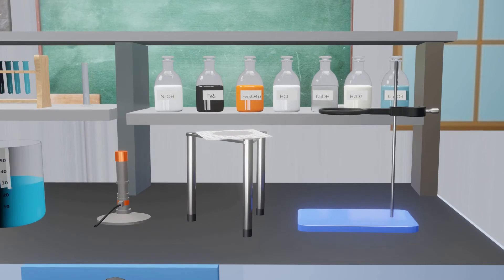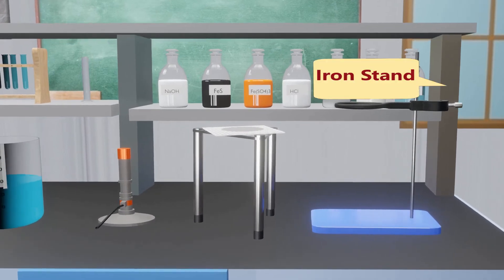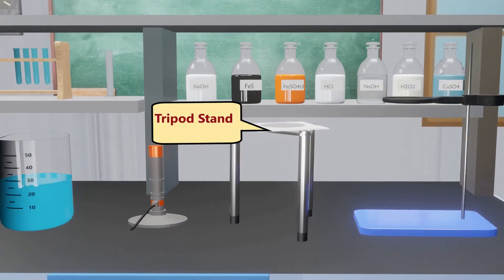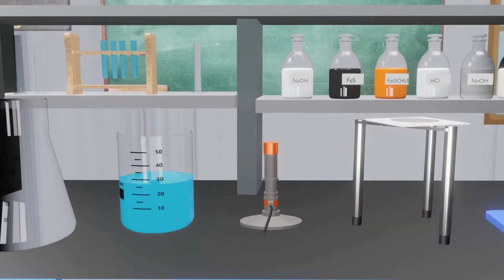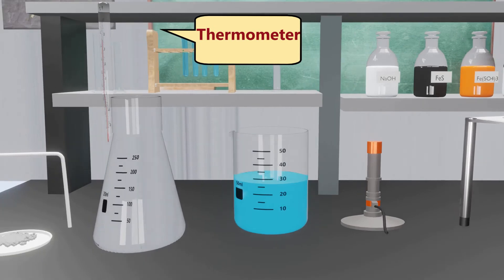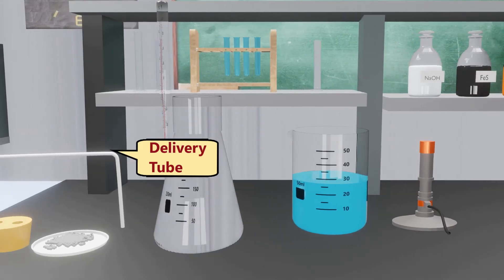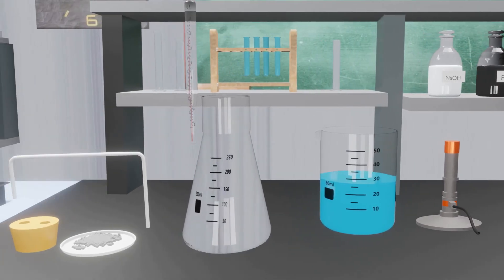Materials required for this experiment are iron stand, tripod stand, Bunsen burner, beaker, conical flask, thermometer, pumice stone, delivery tube, and rubber cork.